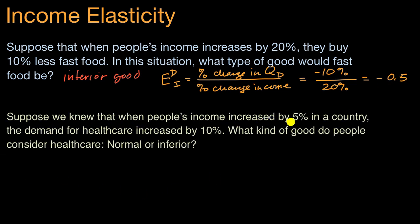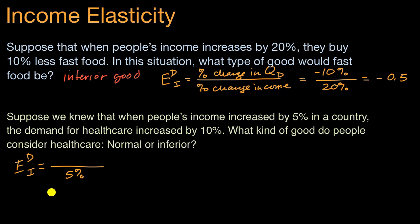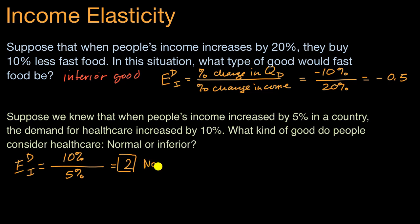Let's do another example. Suppose we knew that when people's income increased by 5% in a country, the demand for healthcare increased by 10%. What kind of good do people consider healthcare — normal or inferior? The income elasticity of demand here: when our income increases by 5% and our demand for healthcare increases by 10%, we get 10% divided by 5%, which is a positive income elasticity of demand of 2. In general, if this is positive, you're dealing with a normal good — as income goes up, you similarly see quantity demanded going up. So healthcare is a normal good.